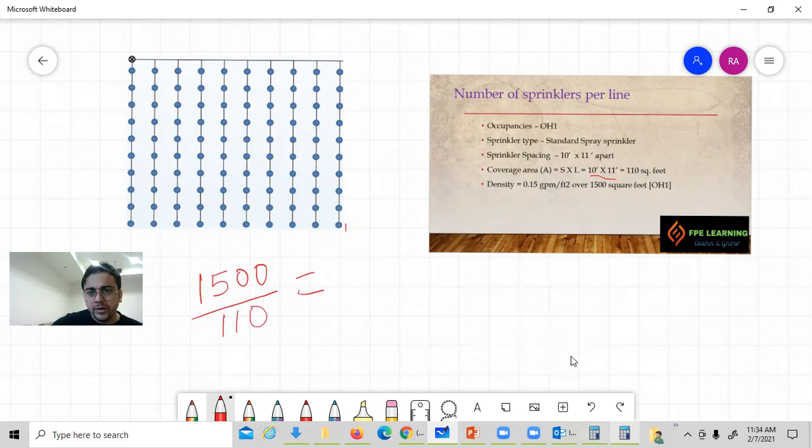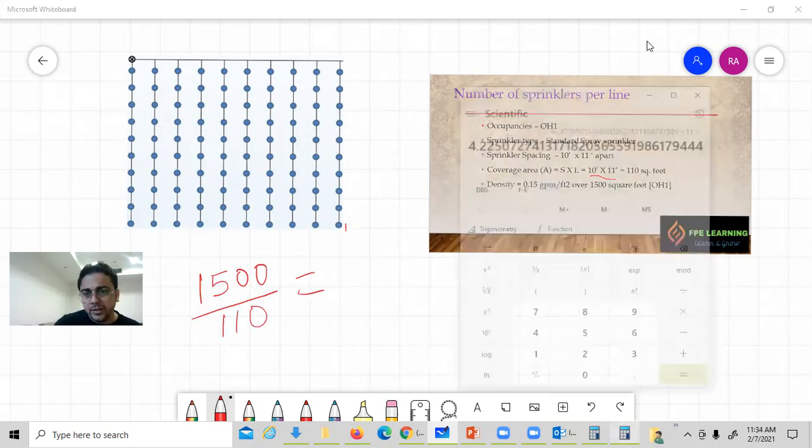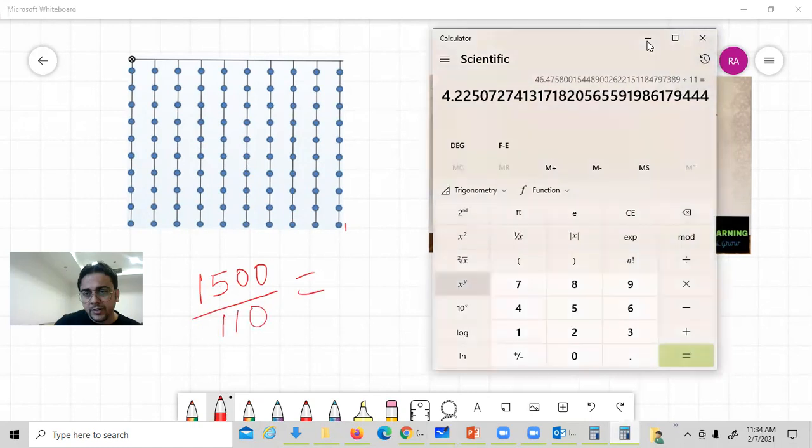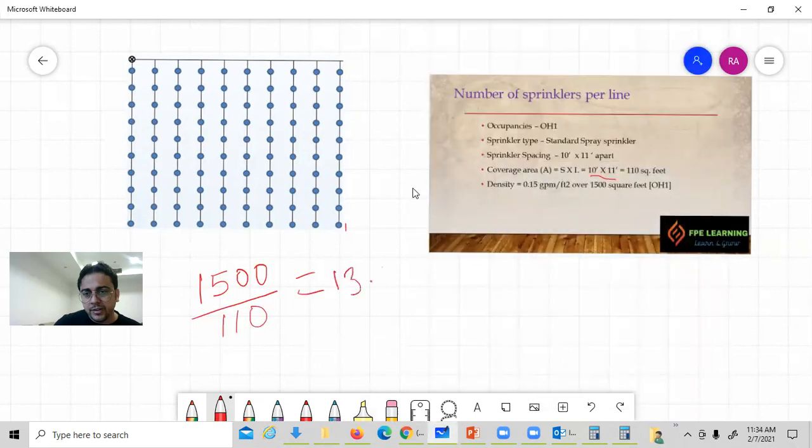I missed one step. If the total design area is 1500 and we have spaced sprinklers by 10 feet by 11 feet, it's 110 square feet. One sprinkler can protect 110 square feet. Total design area divided by 110 equals 1500 over 110, which is 13.6, so let's consider 14. We have to consider 14 sprinklers in our design area.